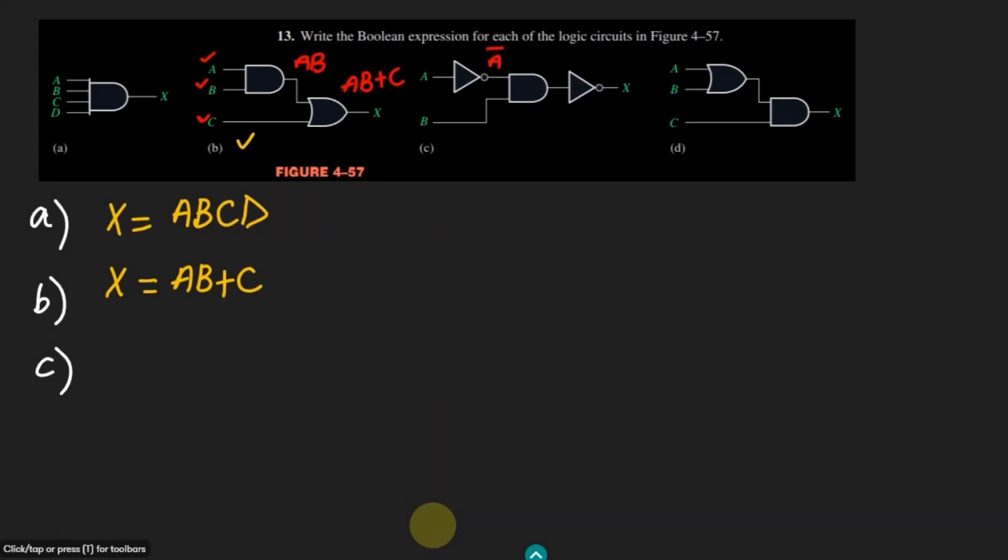When this A is given to this inverter, we will get the complement of it. After getting the complement of it, A prime and B, these two are given to this AND circuit.